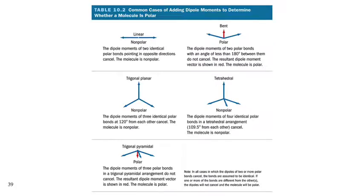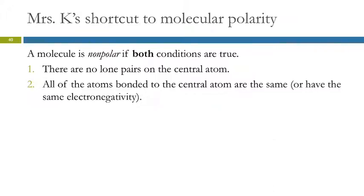These are common cases where you could end up with a polar molecule. Bent molecules are often polar. Trigonal pyramids are often polar. Linear, trigonal planar, and tetrahedral, when there's no lone pairs, are going to end up usually being nonpolar. So all of that probably made your eyes glaze over. So here's my shortcut. This does not work all the time, but it works most of the time, and I think it's a lot easier.